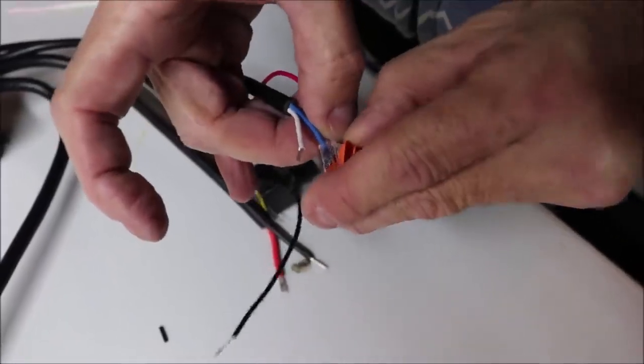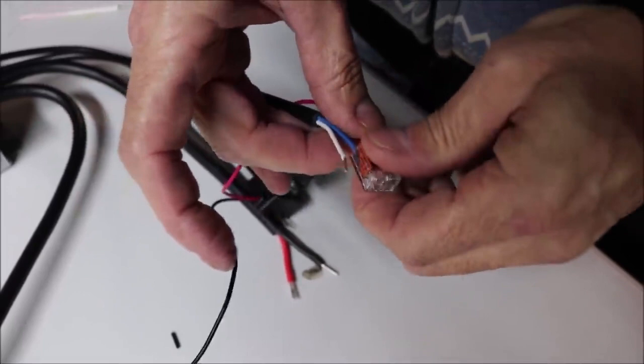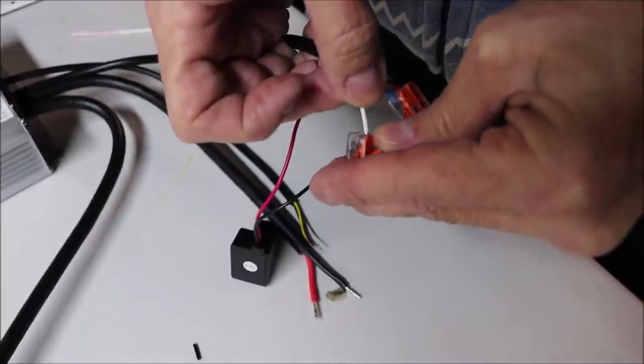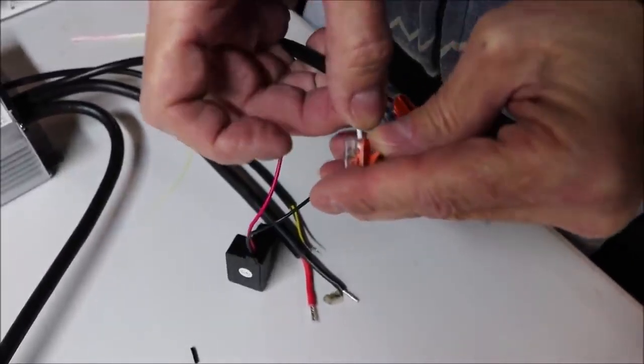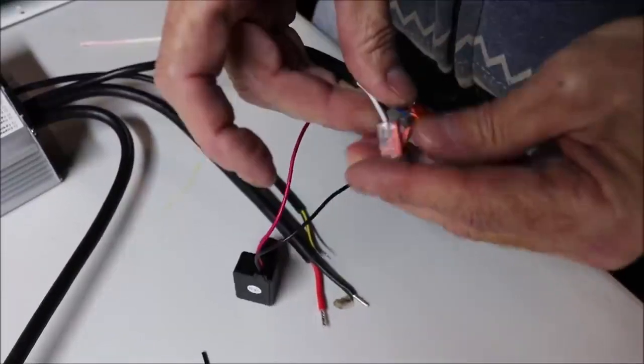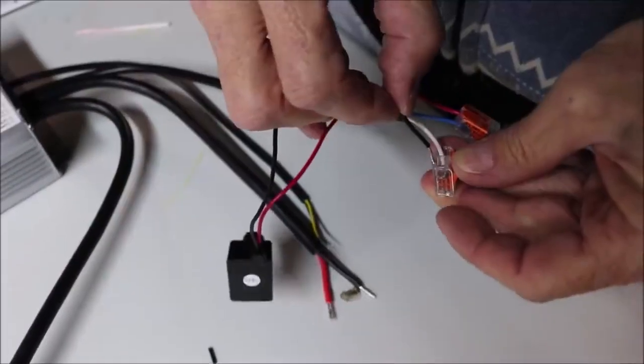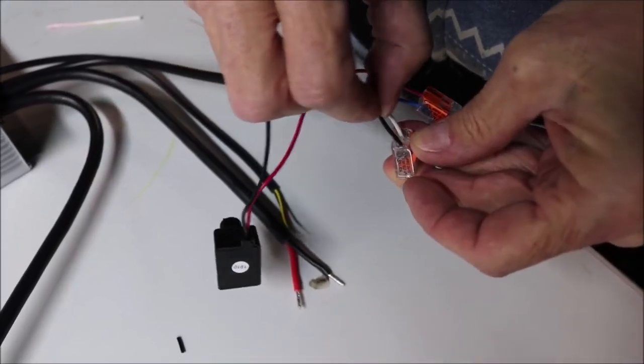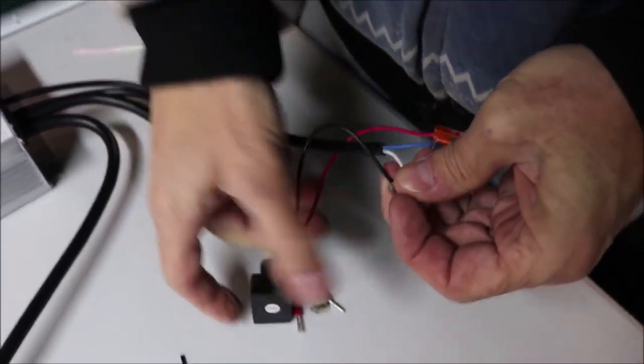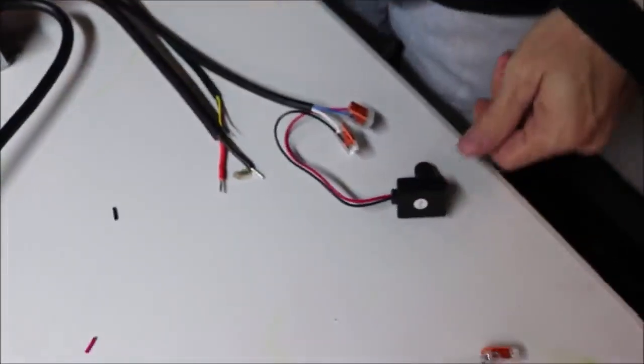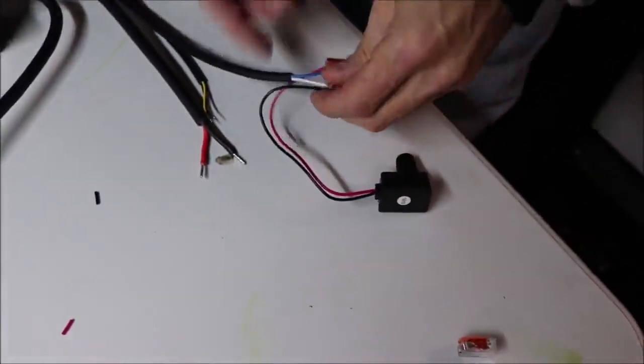Now we're going to start working on the dimmer switch. The red and blue go together. Put them in. And then the white and black go together. Nice and easy. Love it. No tape, no mess. Clip them in, makes a nice snap sound. Boom, dimmer switch done. That easy, you guys.